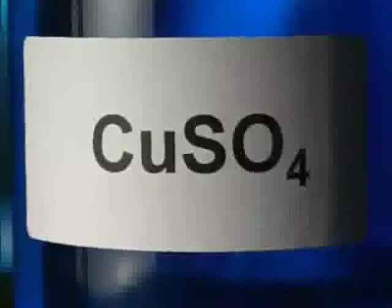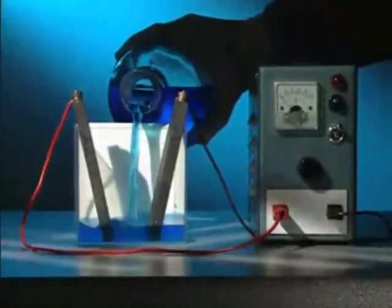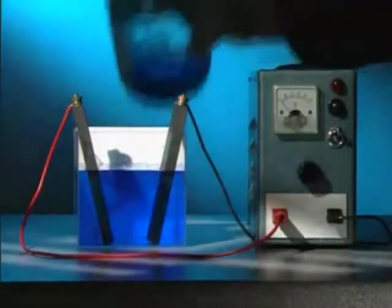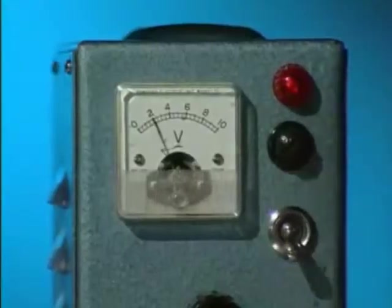Electroplating is used to protect metals from corrosion and make articles more attractive. Copper plating is easy to set up in the laboratory. All you need is a solution of copper sulphate and a method of passing electricity through it. Two carbon electrodes attached to a power supply are immersed in the solution. Switch on. Reactions begin and a current flows. On the left, at the positive electrode, bubbles appear. This colourless gas is oxygen. At the negative electrode, there are no bubbles, but the carbon is slowly starting to change colour. It's being coated with a layer of copper metal.